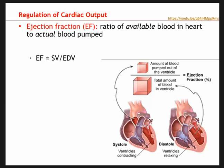Continuing with part two of chapter six, let's look at ejection fraction — the only ratio we'll discuss in chapter six. We're looking at the amount of blood available in the heart to be pumped compared to the actual blood pumped by the ventricles. The equation is stroke volume divided by end-diastolic volume. Every time the ventricles contract they eject a certain amount of blood, and that ratio gives us ejection fraction.